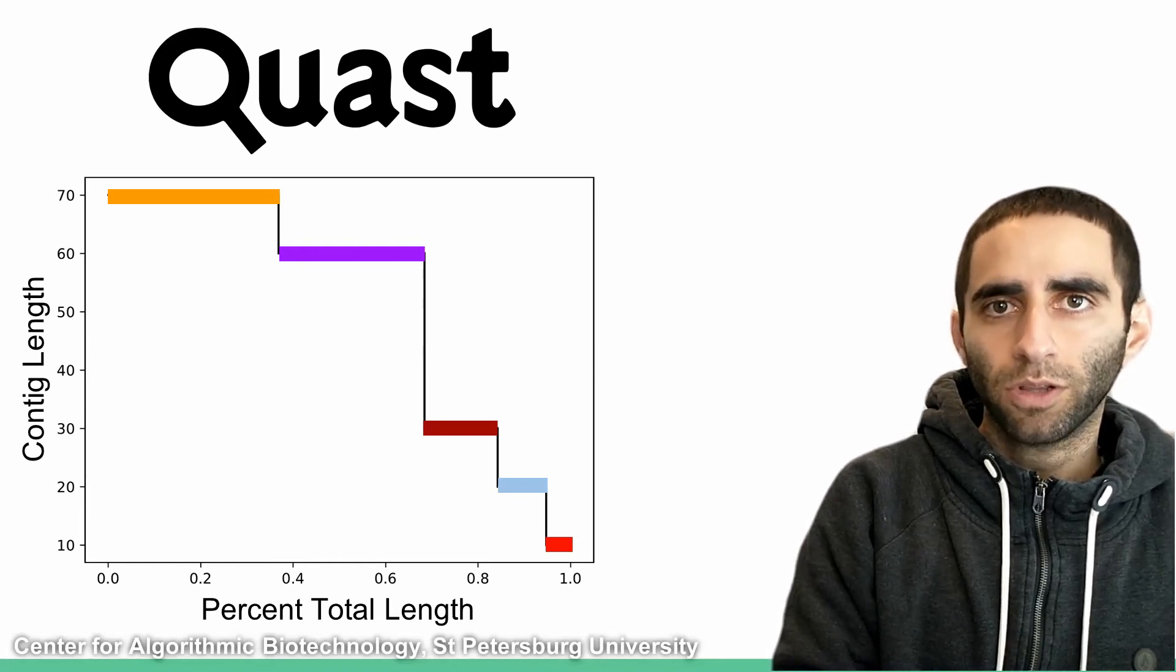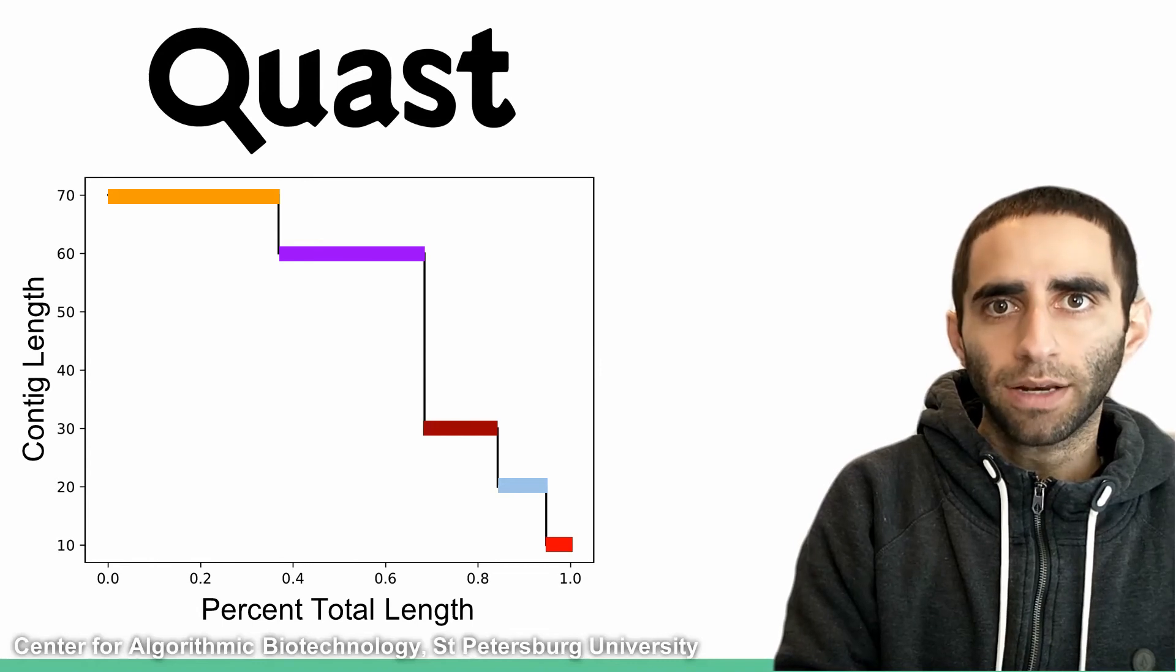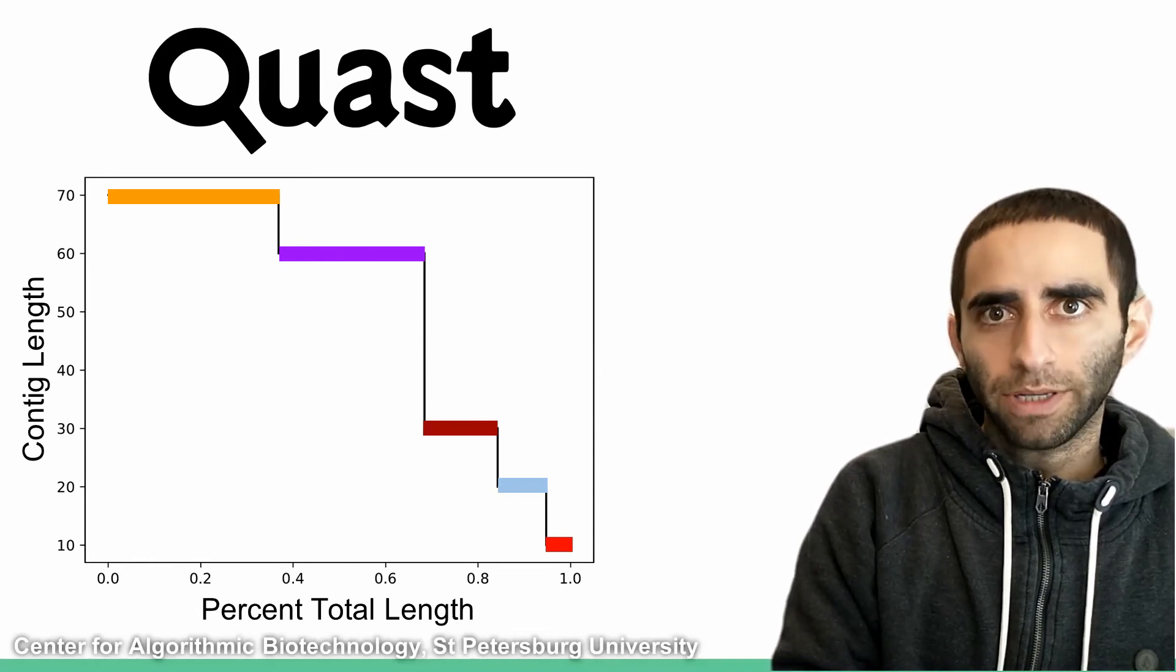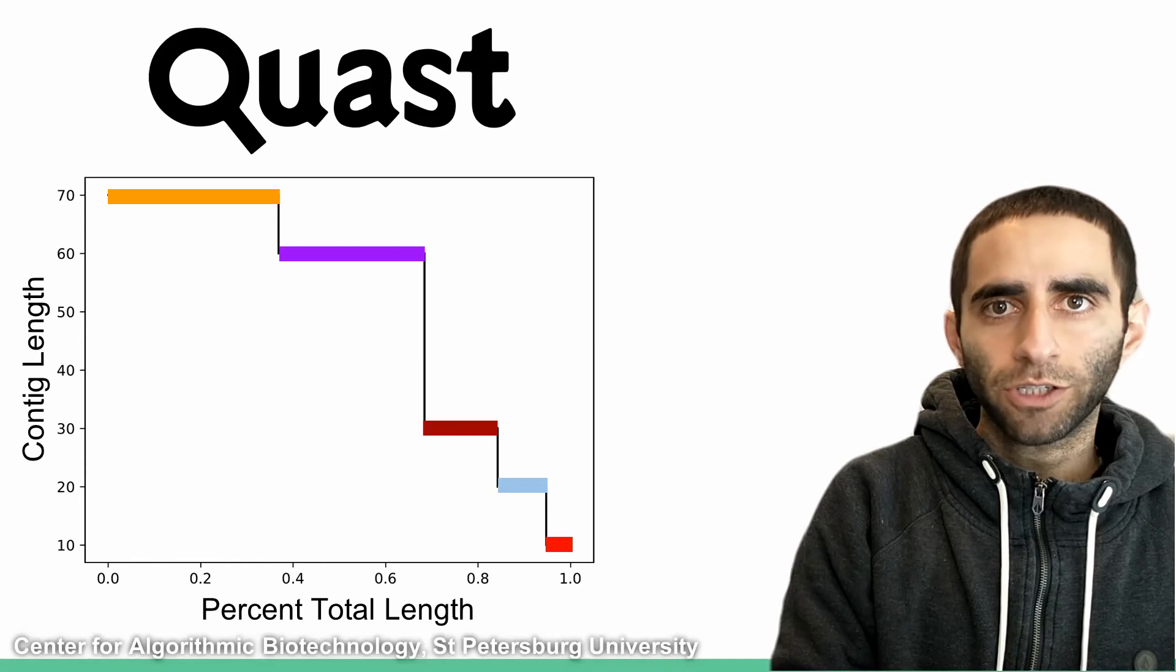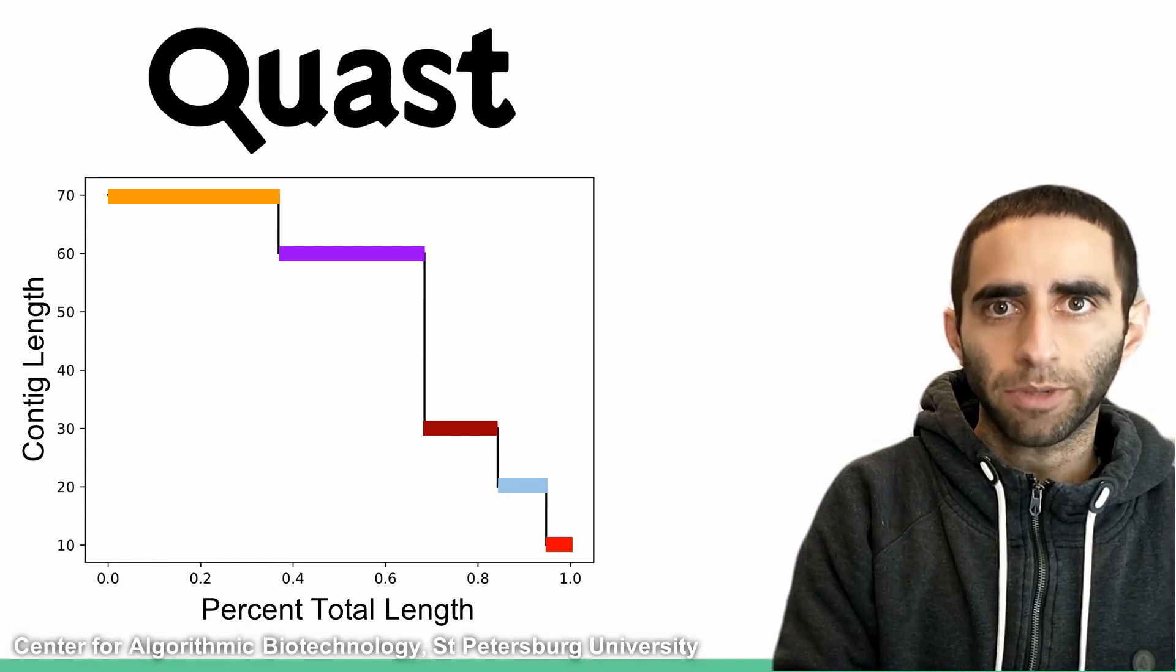In general, the larger the area under this plot, the better our assembly is. You can follow the instruction in this course to learn how to run Quast on our genome assembly.